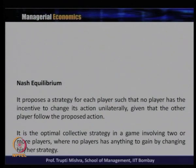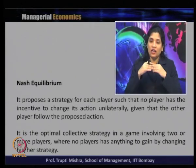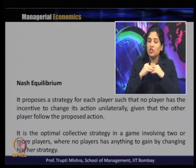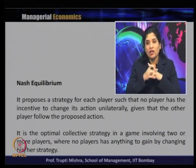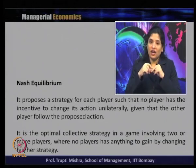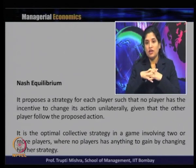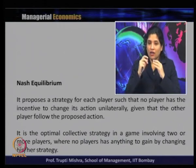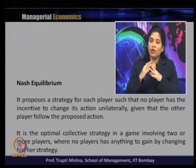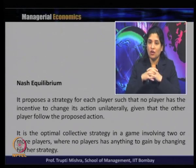Then we will talk about Nash equilibrium. Nash equilibrium generally proposes a strategy for each player such that no player has the incentive to change its action unilaterally, given that the other player follows the proposed action. Equilibrium is a state of balance and rest — beyond this point there is no incentive for a firm to deviate, because that is the place where they get the maximum positive outcome. Nash equilibrium is an optimal collective strategy in a game involving two or more players where no player has anything to gain by changing their strategy.